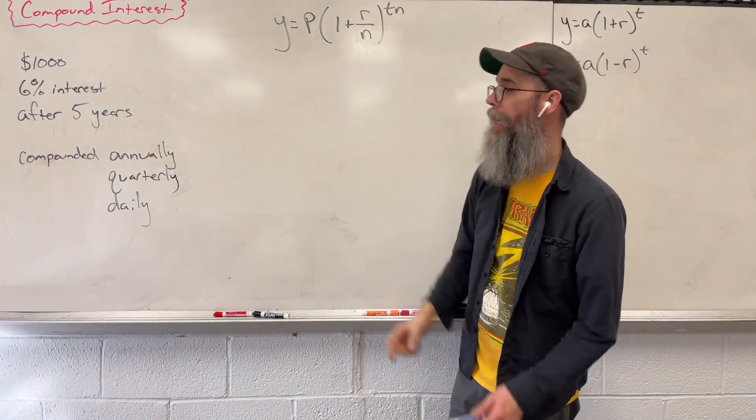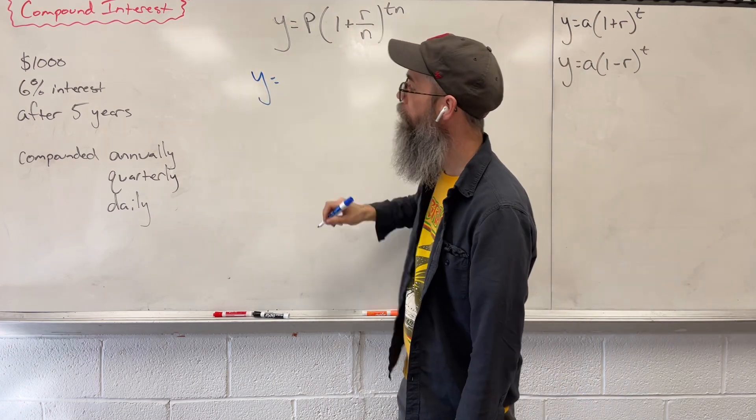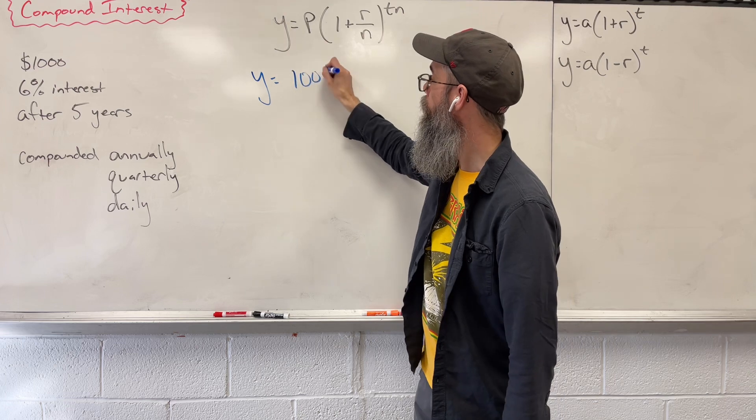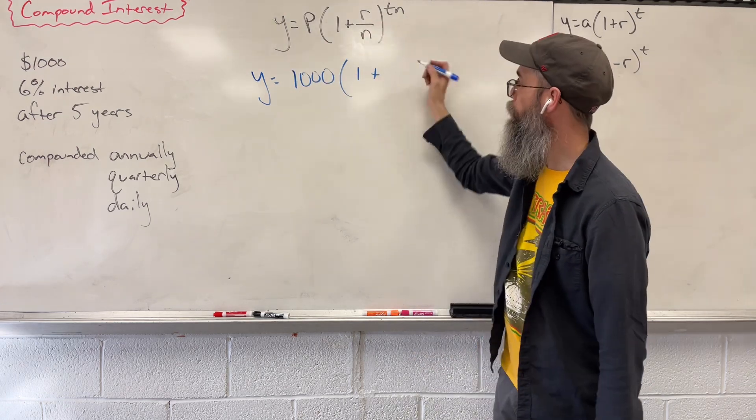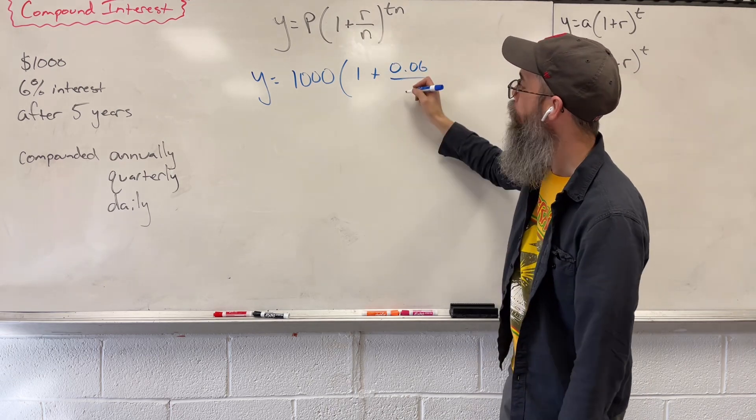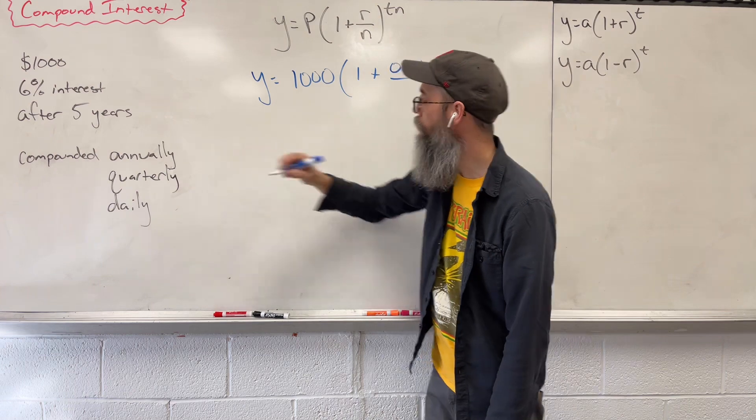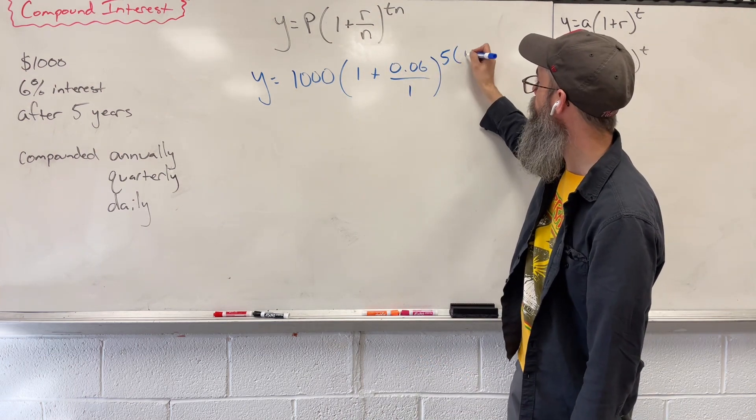Compound it, meaning that N. So let's plug our numbers in and see what happens. Y equals, we start with $1,000. Our rate is 6%, but as a decimal, we say 0.06. We compound it annually, which is once a year. Our time is after five years, and again, one year.